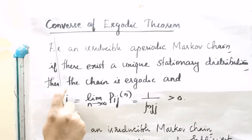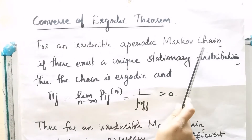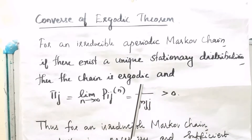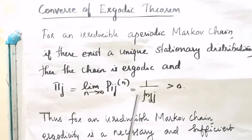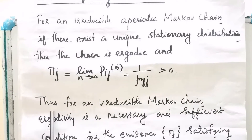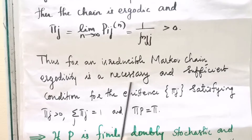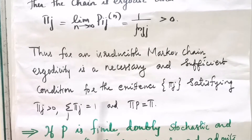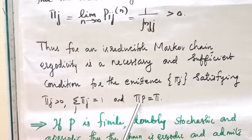We also have the converse of the ergodic theorem. For an irreducible, aperiodic Markov chain, if there exists a unique stationary distribution, then the chain is ergodic and πj = lim(n→∞) Pijn = 1/μjj > 0. Thus, for an irreducible Markov chain, ergodicity is a necessary and sufficient condition for the existence of πj satisfying πj ≥ 0, Σ πj = 1, and πP = π.